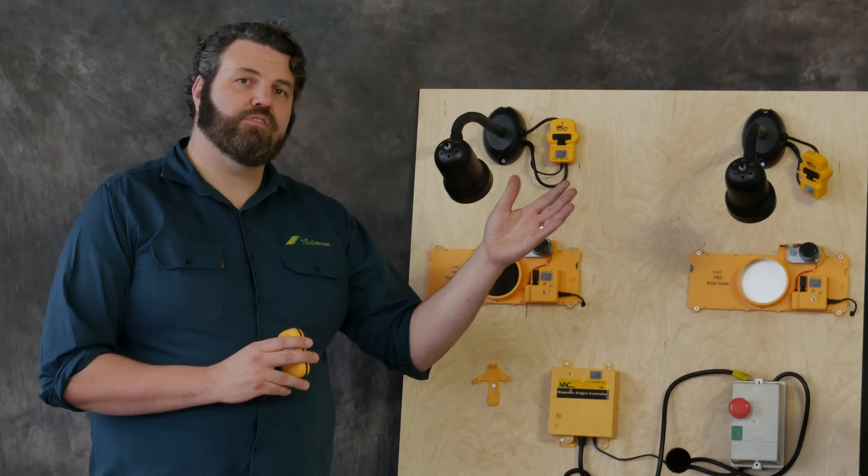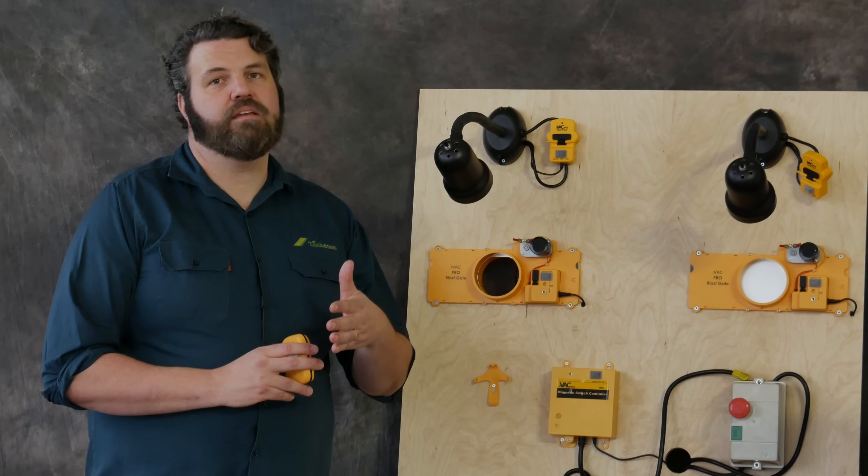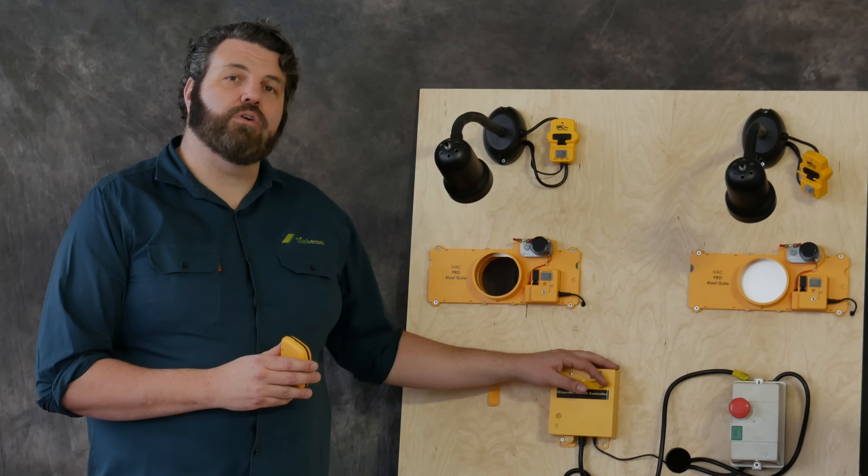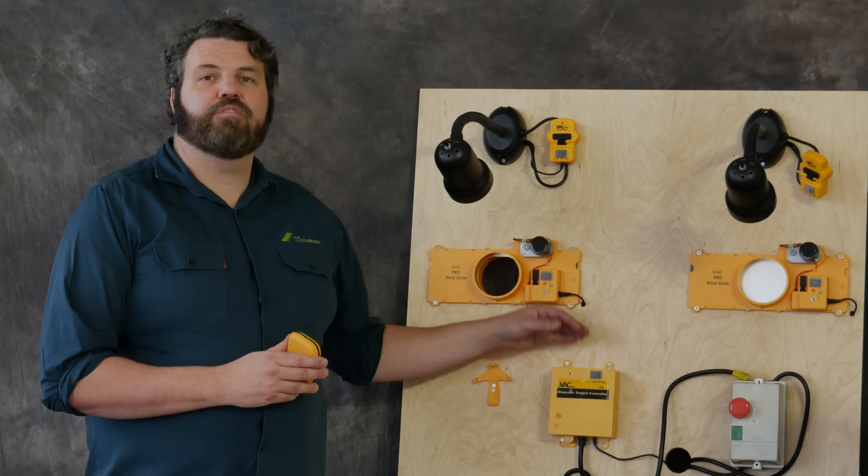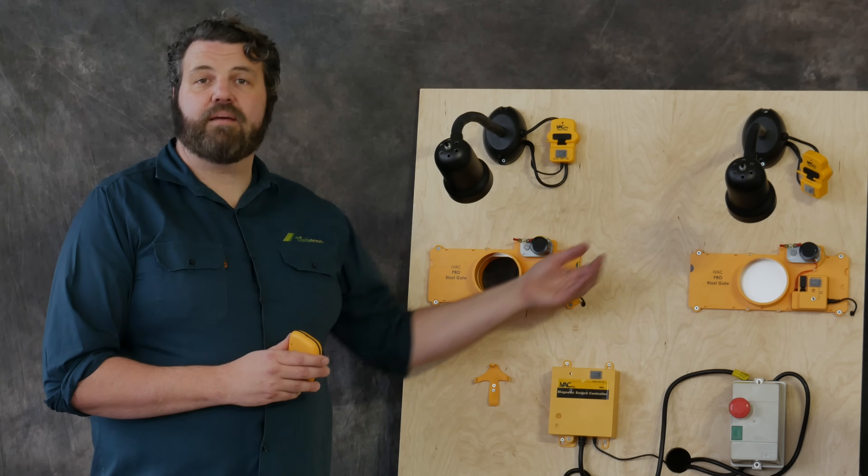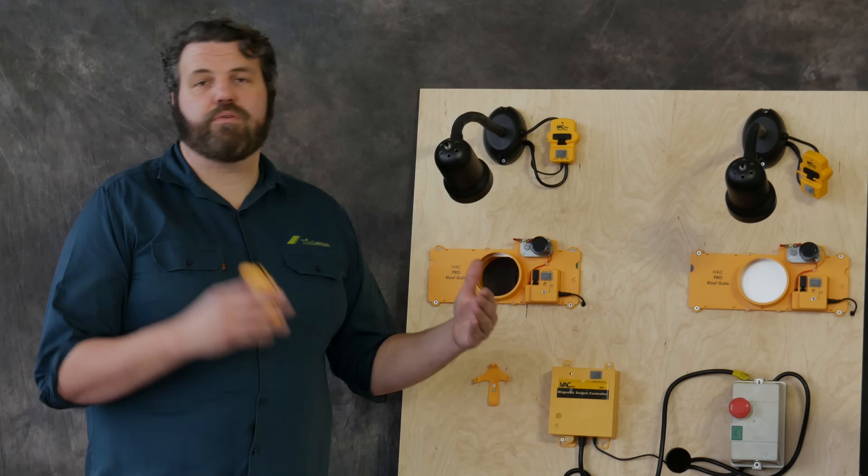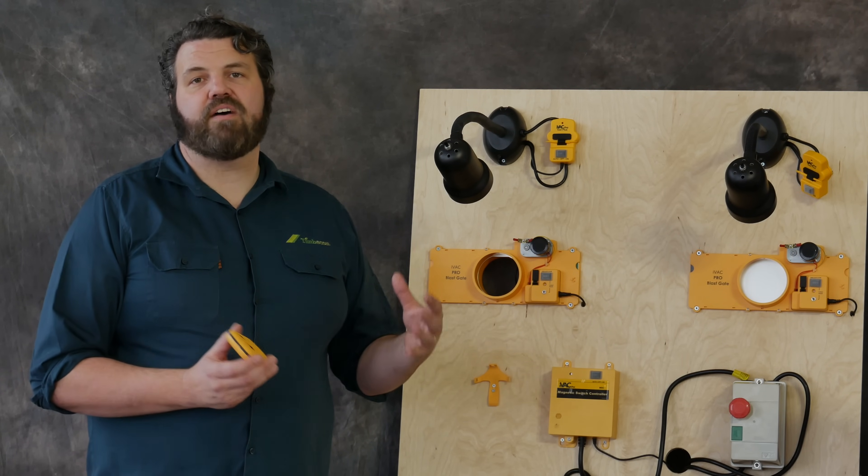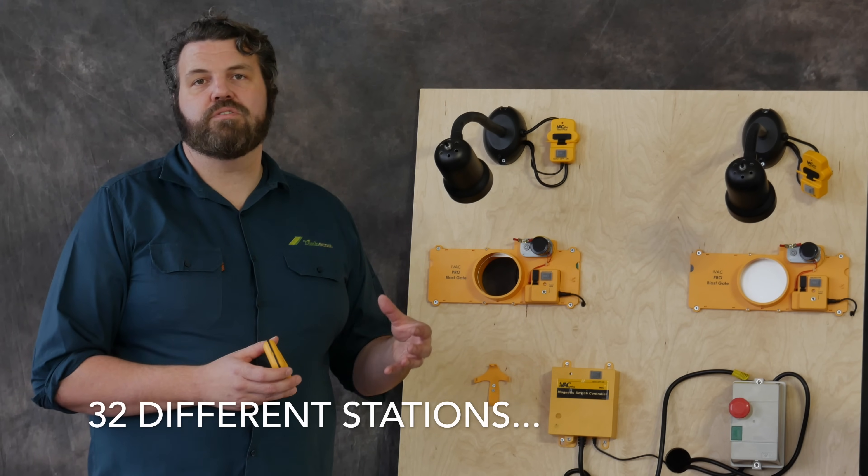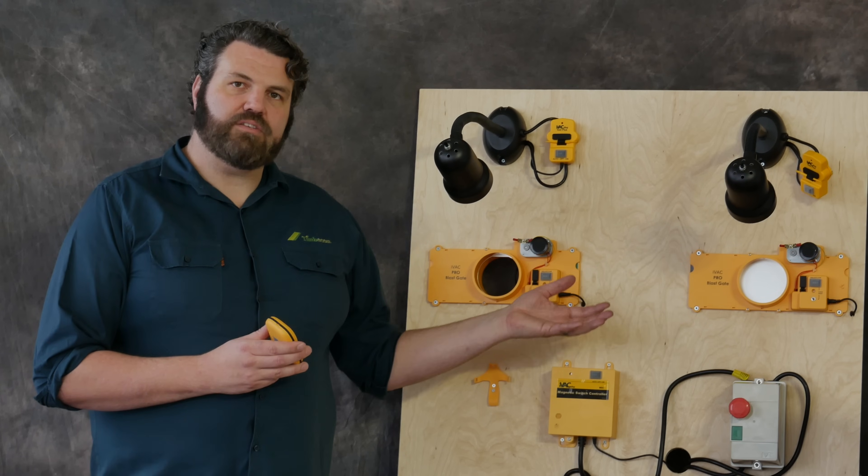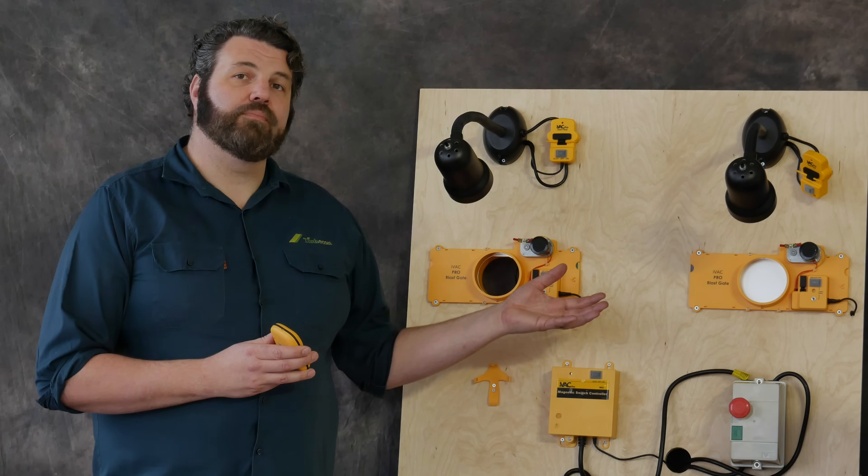But if you have more than eight, you get a second controller and you set the second controller to B, then you'll have B1, B2, all the way up to eight. Then you can go to band C and band D, D1 through to eight, which means you can have up to 32 different stations in the one location with automated dust control all the way through your system.